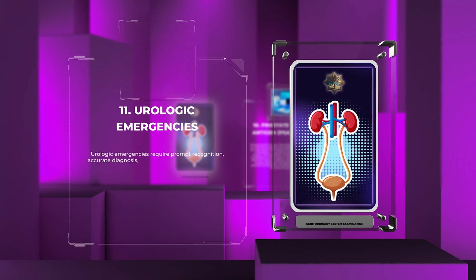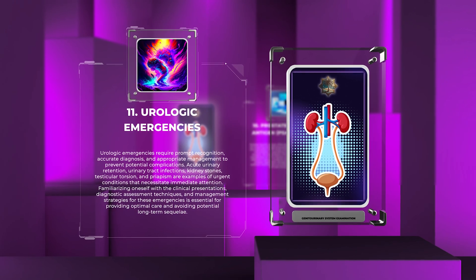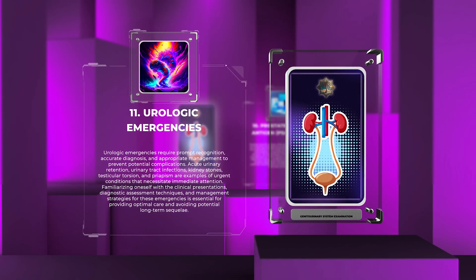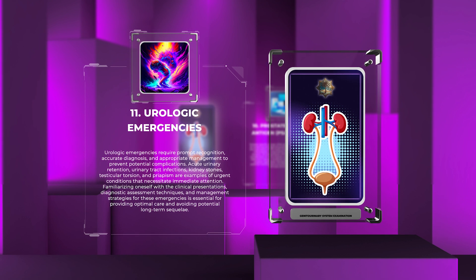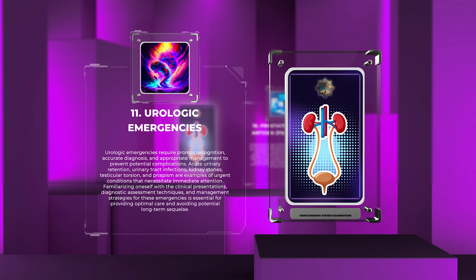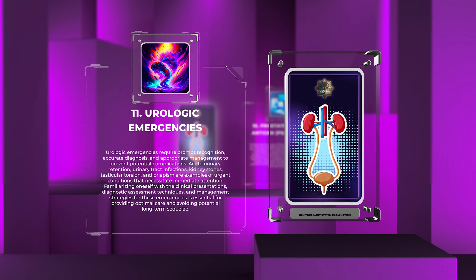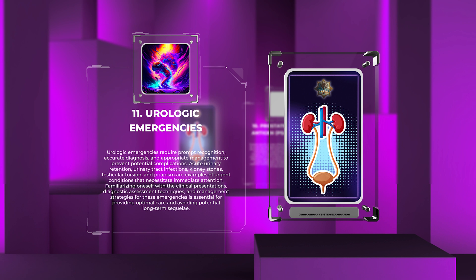Urologic emergencies require prompt recognition, accurate diagnosis, and appropriate management to prevent potential complications. Acute urinary retention, urinary tract infections, kidney stones, testicular torsion, and priapism are examples of urgent conditions that necessitate immediate attention. Familiarizing oneself with the clinical presentations, diagnostic assessment techniques, and management strategies for these emergencies is essential for providing optimal care and avoiding potential long-term sequelae.